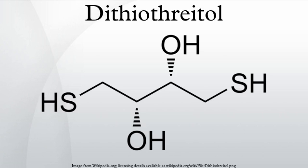Dithiothreitol (DTT) is the common name for a small molecule redox reagent known as Cleland's reagent. DTT's formula is C4H10O2S2 and the molecular structure of its reduced form is shown at the right. Its oxidized form is a disulfide-bonded six-membered ring.